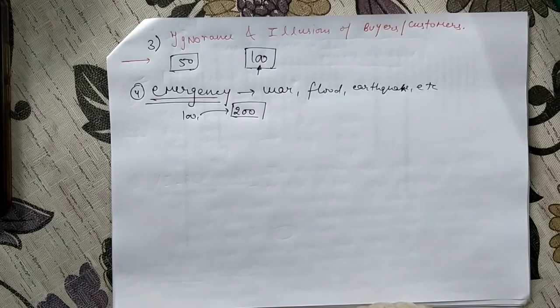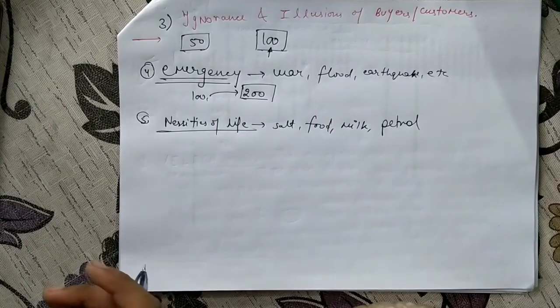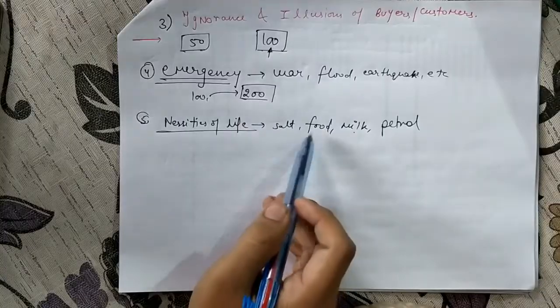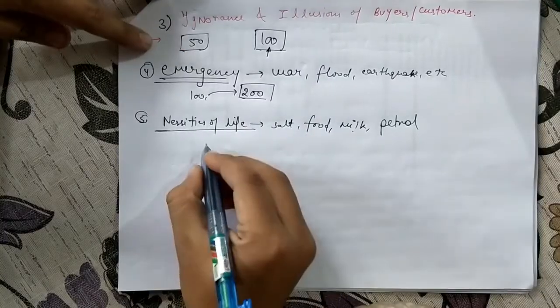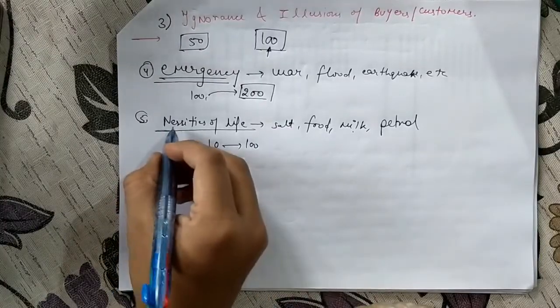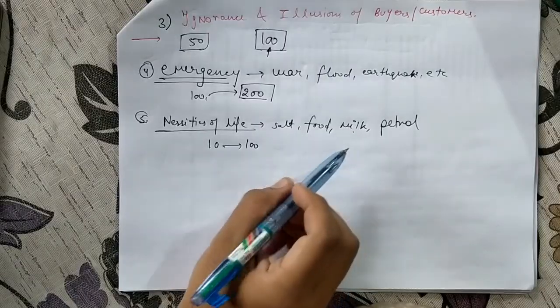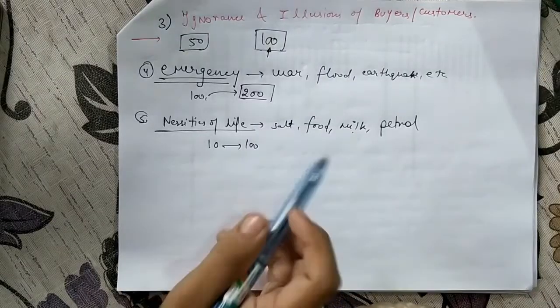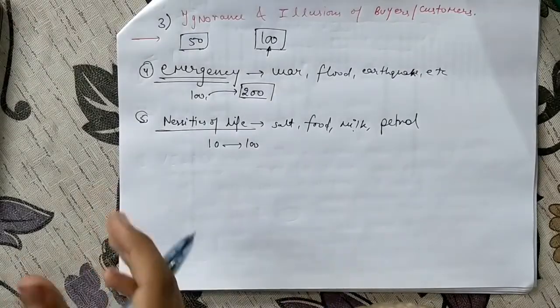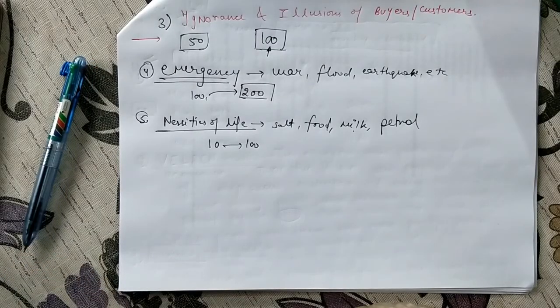The fifth point is necessities of life. For example, we will always buy milk, food, and salt, no matter if the cost rises from 10 rupees to 100 rupees. These are the basic necessities of life. Everyone needs food, everyone needs milk and salt, and if you want to drive a vehicle then obviously you need petrol. So these are the basic necessities—no matter if their price goes from 100 to 200 or anything, we will buy them. So these are the certain exceptions to the law of demand.